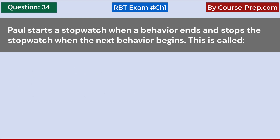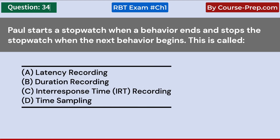Paul starts a stopwatch when a behavior ends and stops the stopwatch when the next behavior begins. This is called: A. Latency recording. B. Duration recording. C. Interresponse time (IRT) recording. D. Time sampling. Answer C: Interresponse time (IRT) recording.